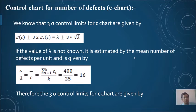Since we know that the number of defects here follows a Poisson distribution, lambda hat, which is the estimated value of lambda, is equal to c bar.